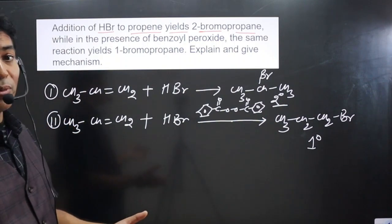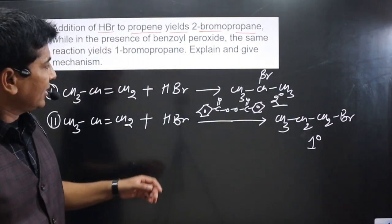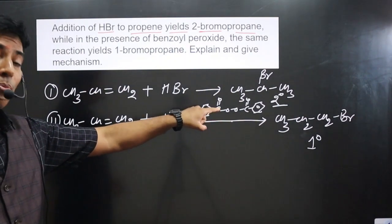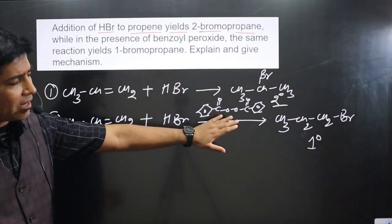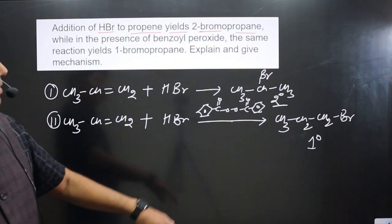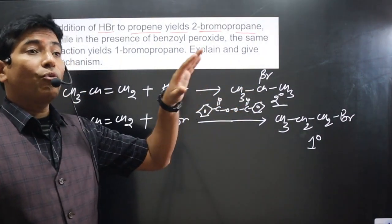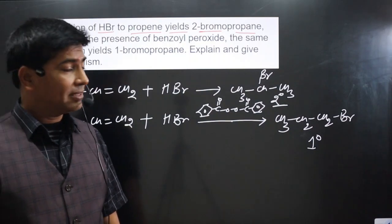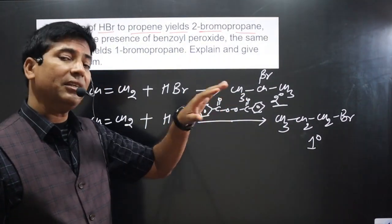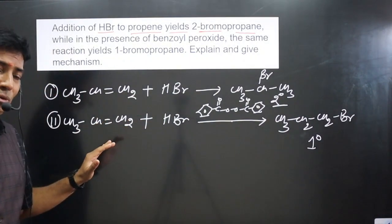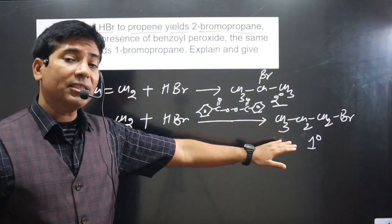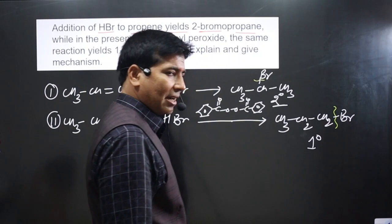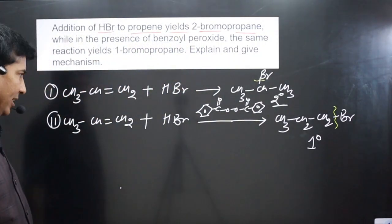You might have learned about Markovnikov's rule. The first reaction takes place via Markovnikov's rule, and the second reaction shows the peroxide effect — anti-Markovnikov's rule. In the Markovnikov product we get a product from the stable carbocation, while in the anti-Markovnikov reaction we get the product from the least stable carbocation. In the first case we get a secondary carbocation; in the second case a primary carbocation.